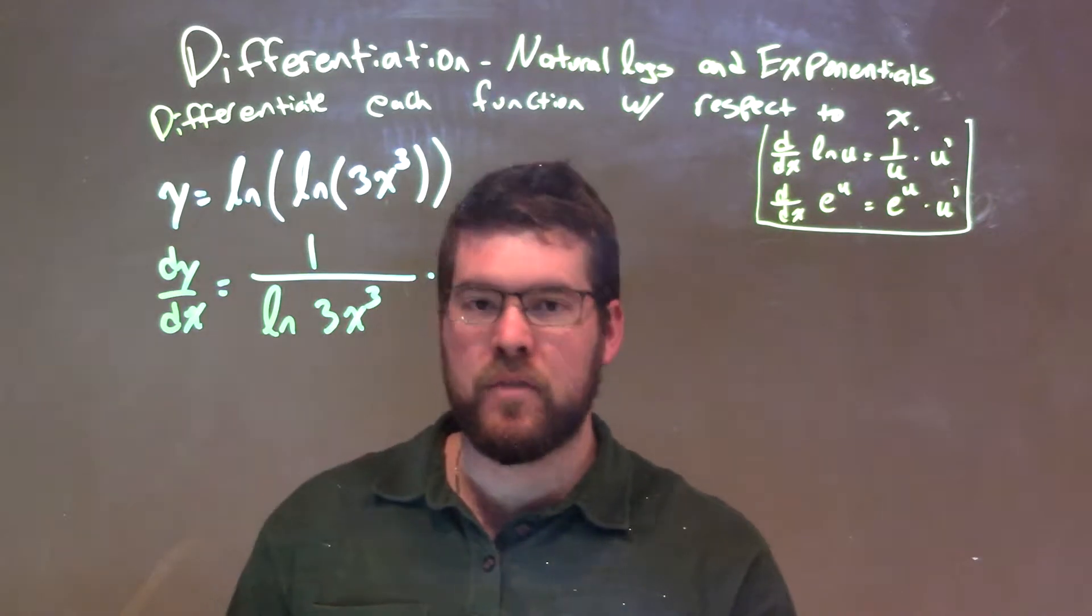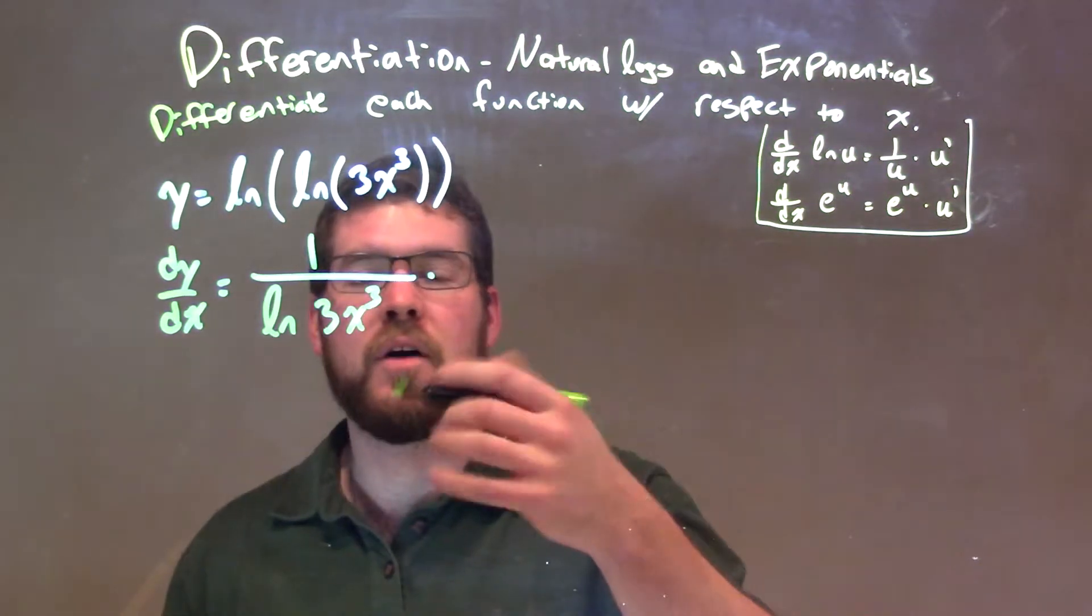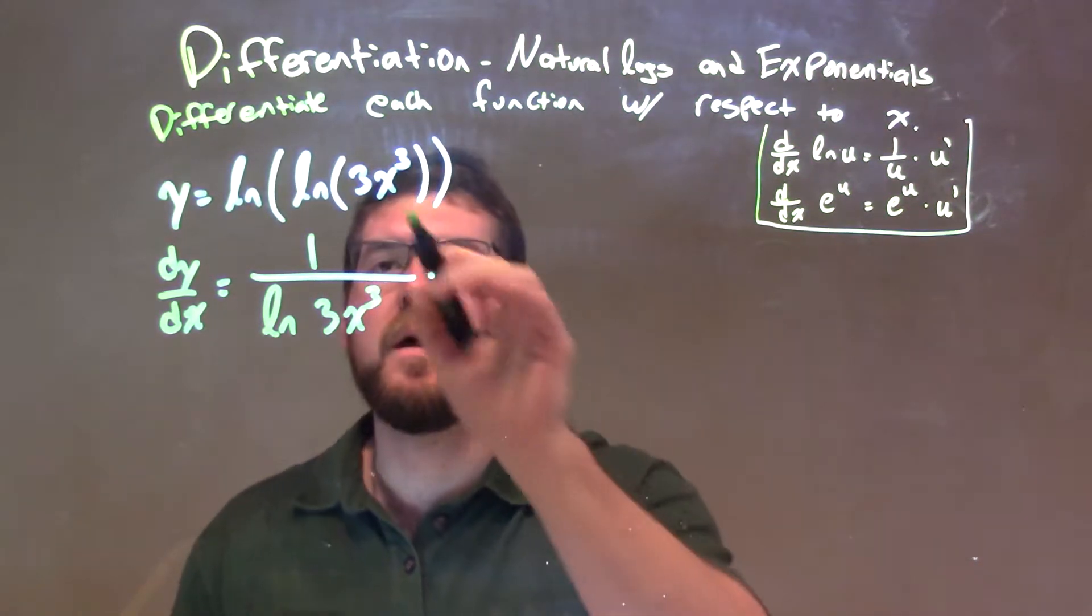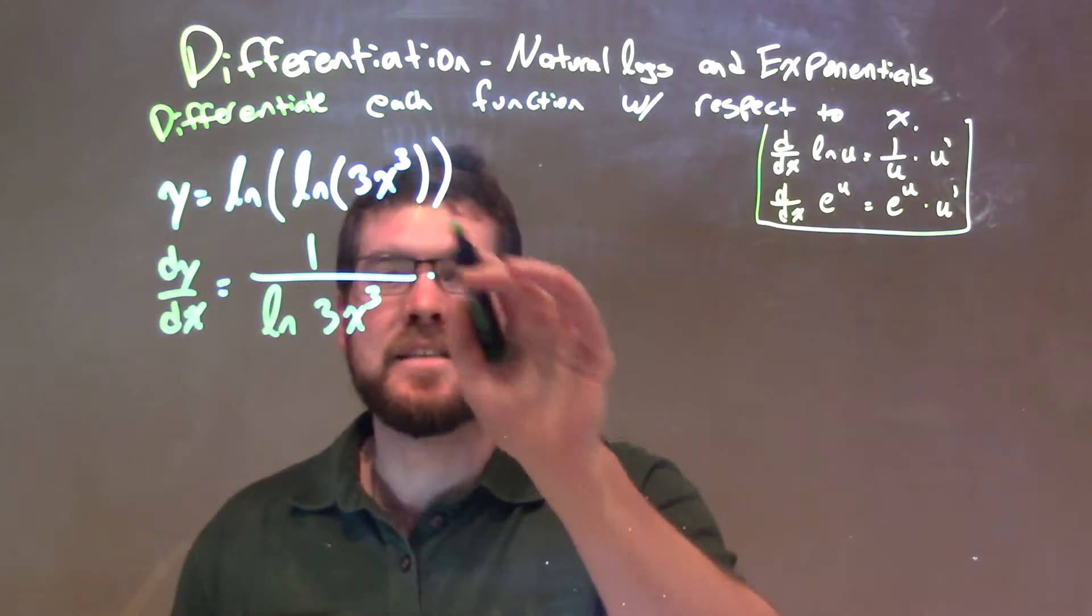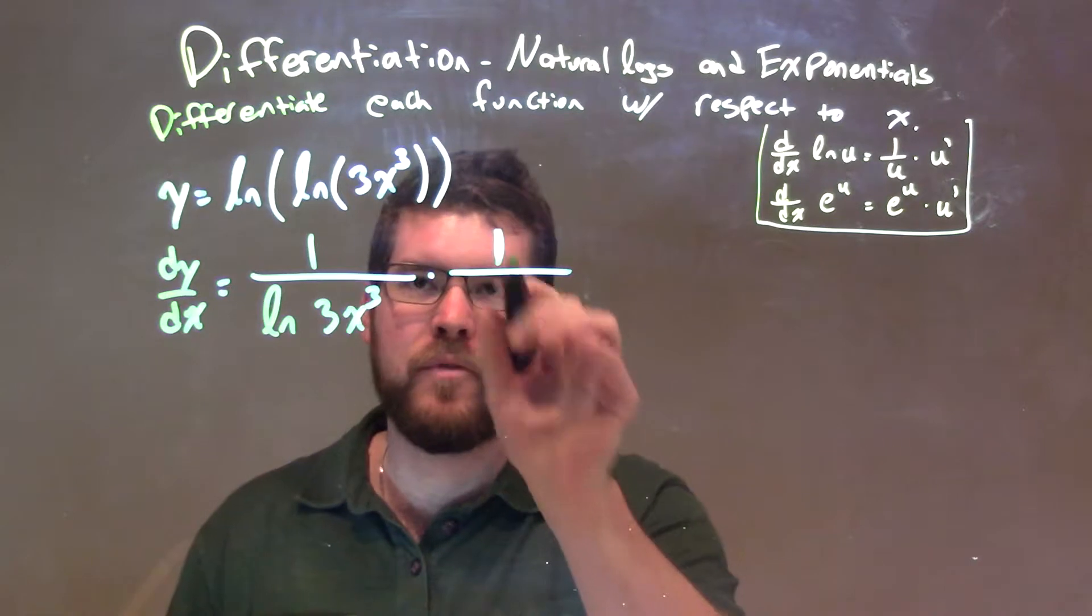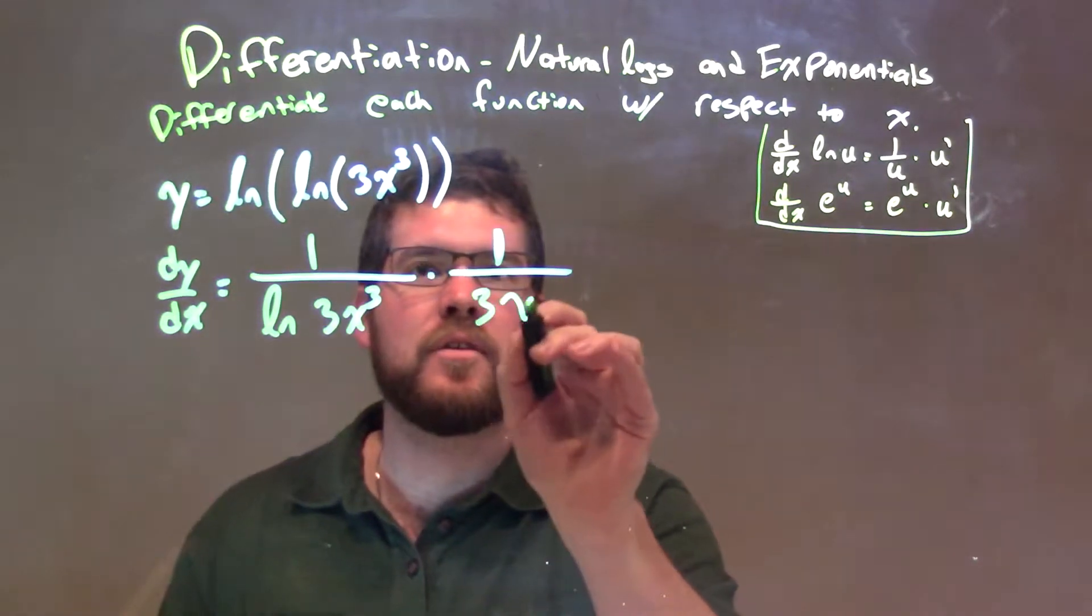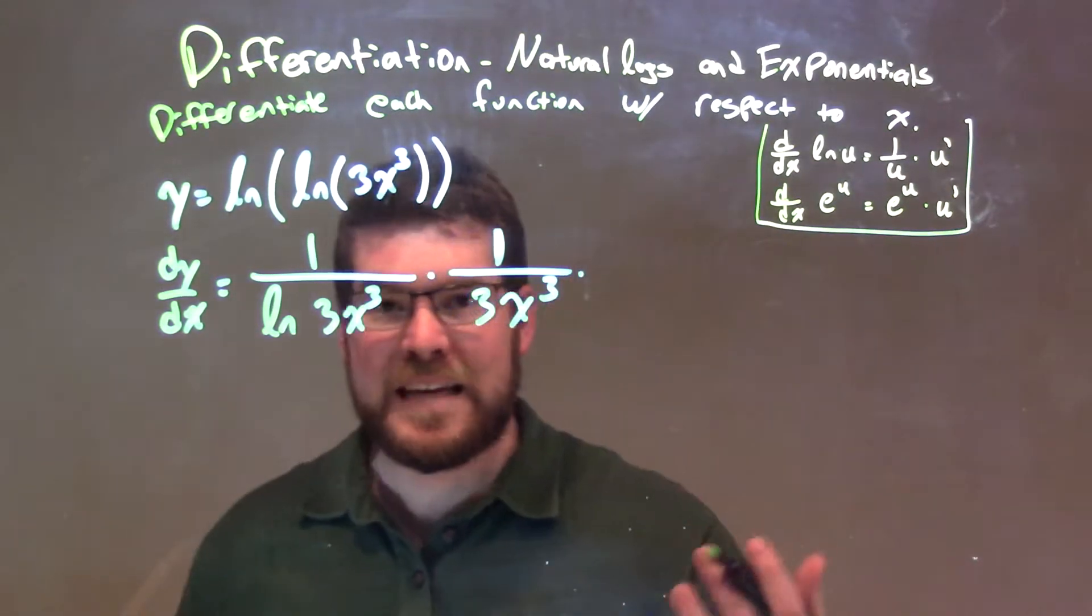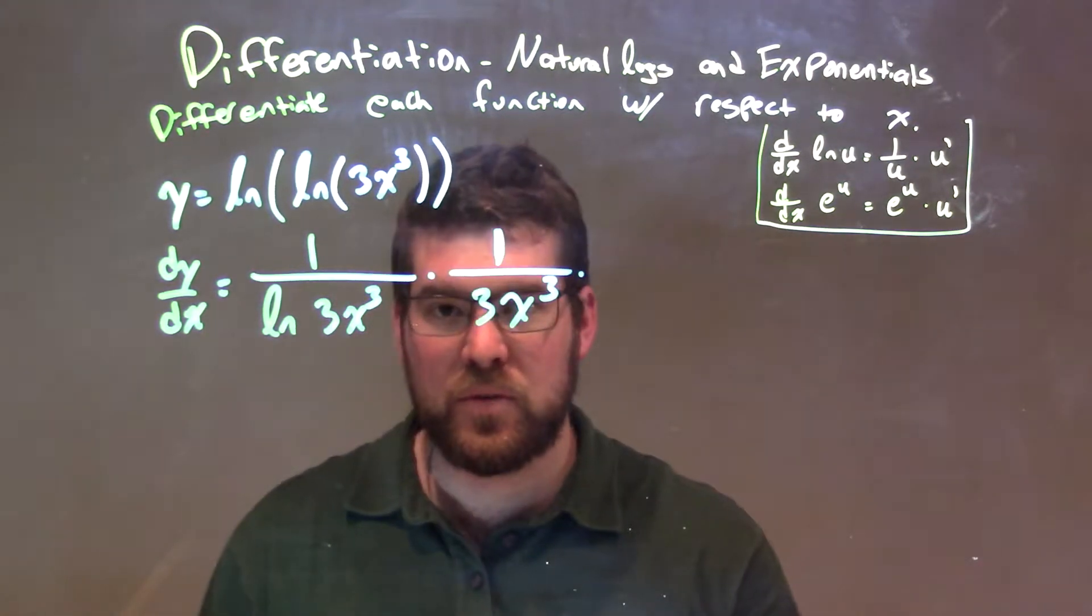Times the derivative of the inside. Well, the derivative of the inside involves another set of chain rule, okay? Natural log of that inside, we have 1 over the inside. So 1 over 3x to the third, times the derivative of the inside, derivative of 3x to the third.